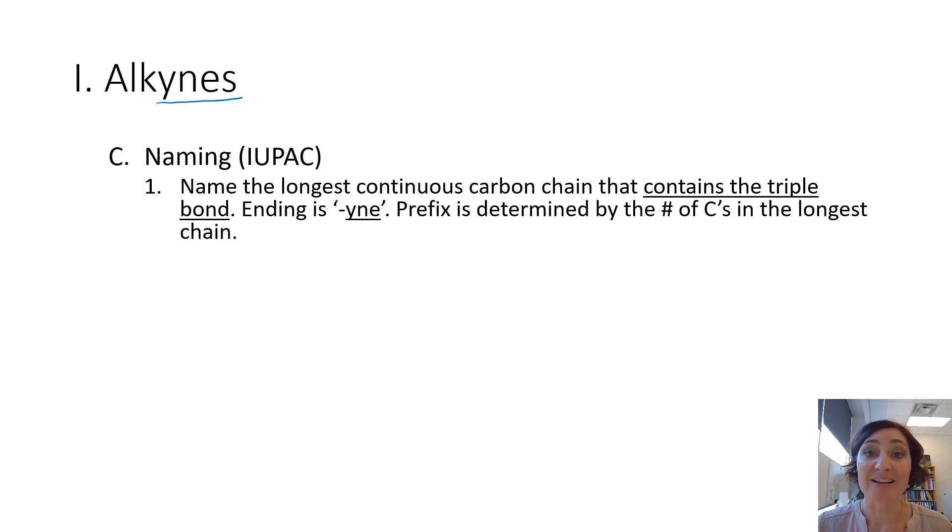So alkanes, A-N-E is a single bond. Alkene, E-N-E is a double bond. And alkyne, Y-N-E is a triple bond. So when you're talking about these guys, you're naming them, make sure that you enunciate because alkene, alkane, and alkyne all kind of sound the same. Your prefix is determined by the number of carbons in the longest continuous chain that includes the triple bond.